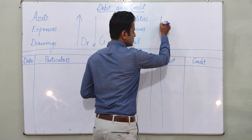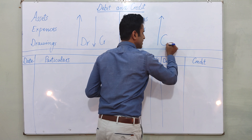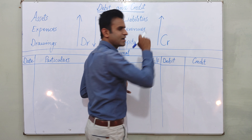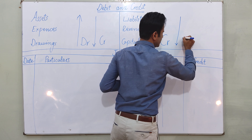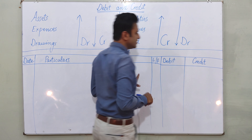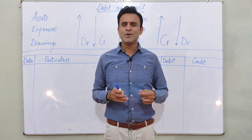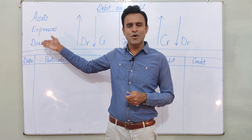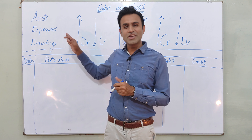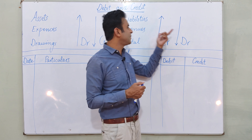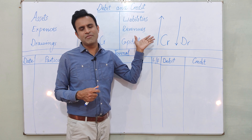In these three things — liabilities, revenues, and capital — when they increase in a transaction, you write them in credit. And when the first group of assets, expenses, and drawings decreases, where do you write it? Credit. And when liabilities, revenues, and capital decrease, where do you write it? Debit. This distinction is integral and will help you write journal entries.